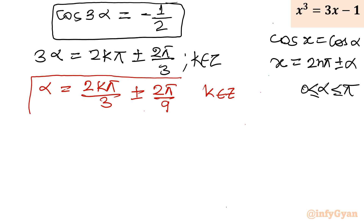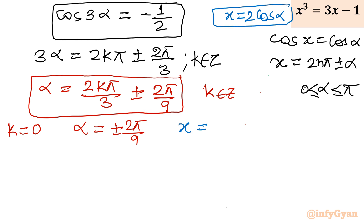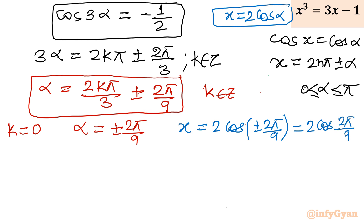Putting k = 0: α = ±2π/9. Since α should lie between 0 and π, we take the positive value. Our substitution was x = 2cos α, so x = 2cos(2π/9). Calculating this value gives approximately 1.532. This is our first solution.